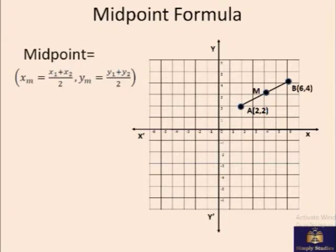If you want to find out the midpoint between these two points, there are again those two points A at 2, 2 and B at 6, 4. And this M, let's assume it is at the midpoint. This is how we calculate this.